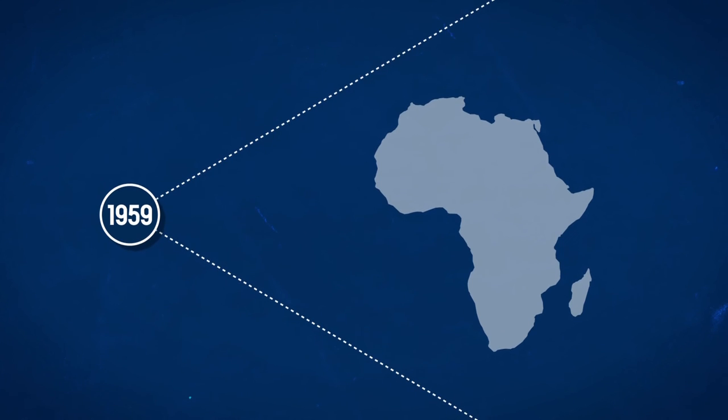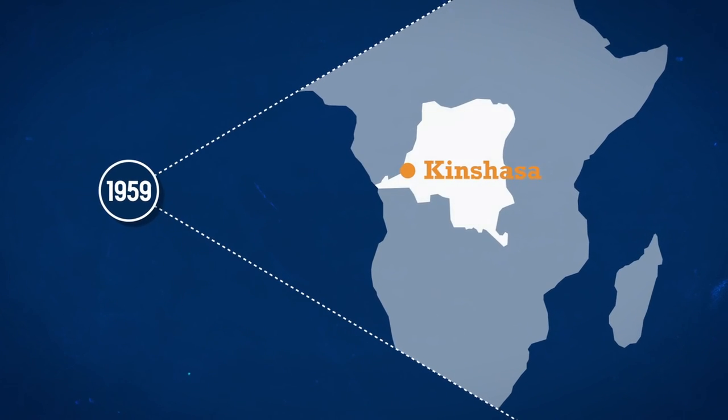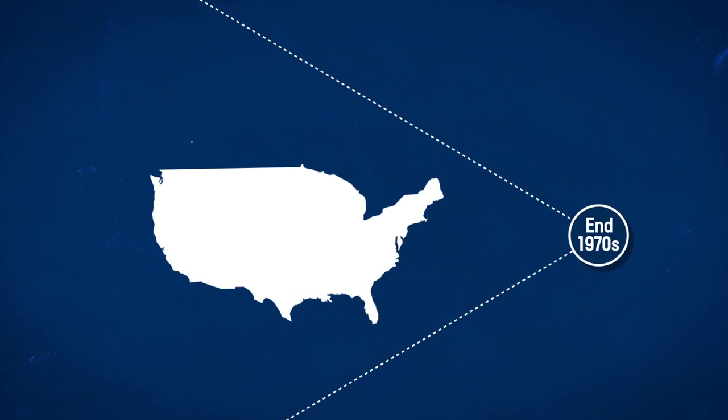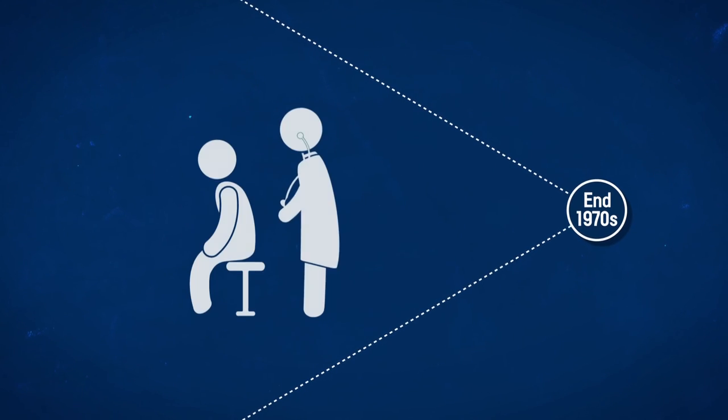The first sign of HIV infection in a human was reported in 1959 in Kinshasa, in Belgian Congo. But it was towards the end of the 1970s, in the United States, that HIV-AIDS really burst onto the scene.